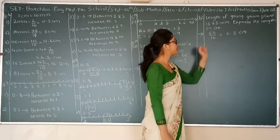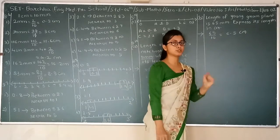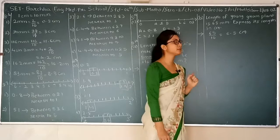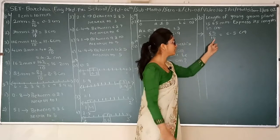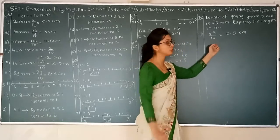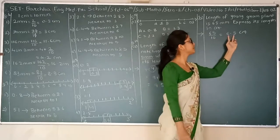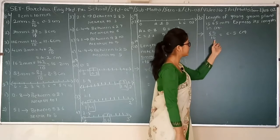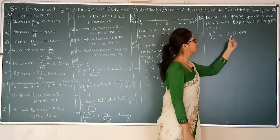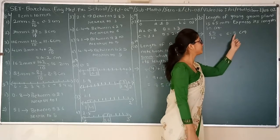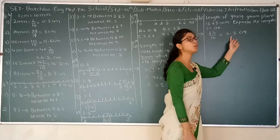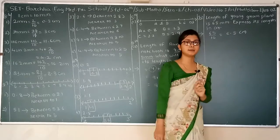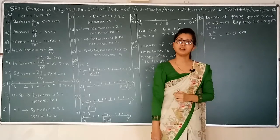The length of a young plant is 65 mm and we need to express it in centimeters. 10 mm is equal to 1 cm, so 65 mm equals 65 upon 10. We place the decimal point to get 6.5 cm as the answer.